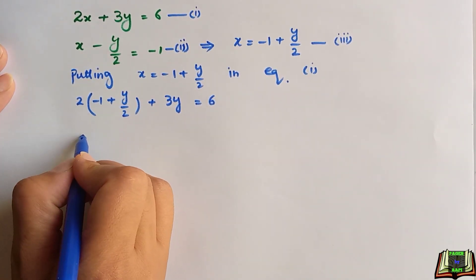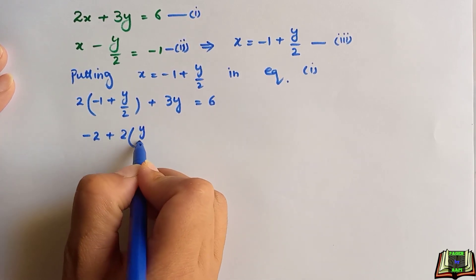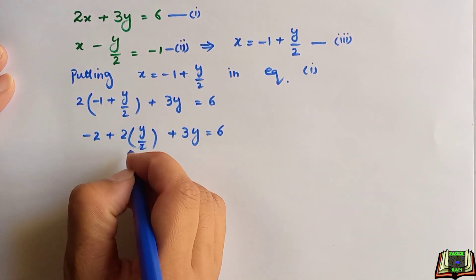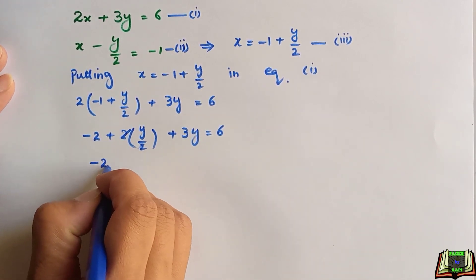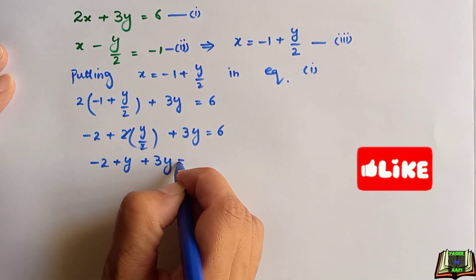Now I will multiply with both. -2 + 2(y/2) + 3y = 6. 2 and 2 will be cancelled out. -2 + y + 3y = 6.